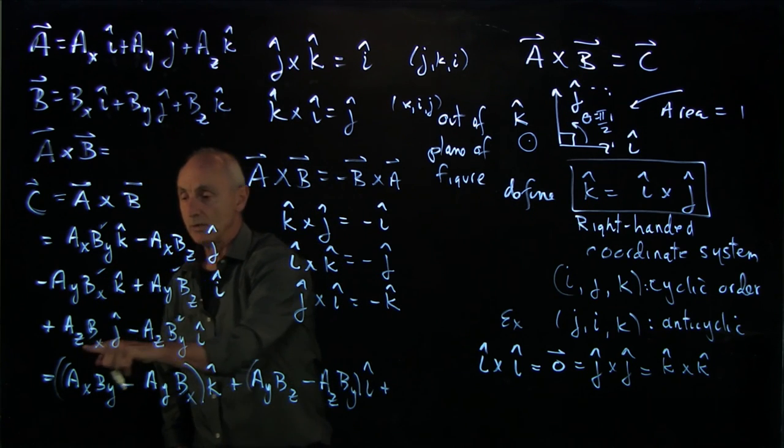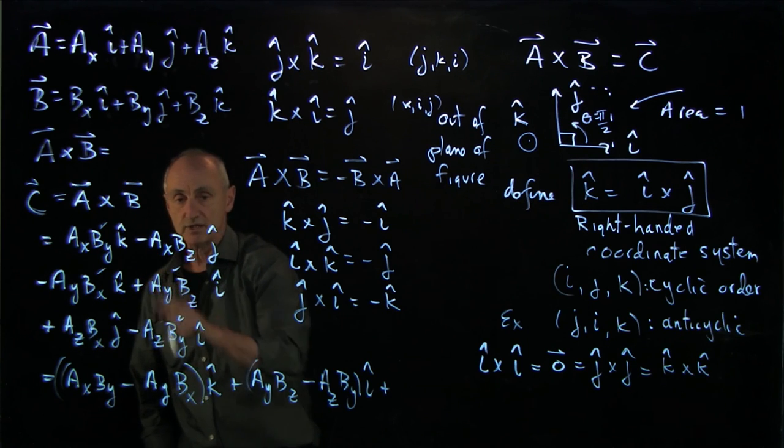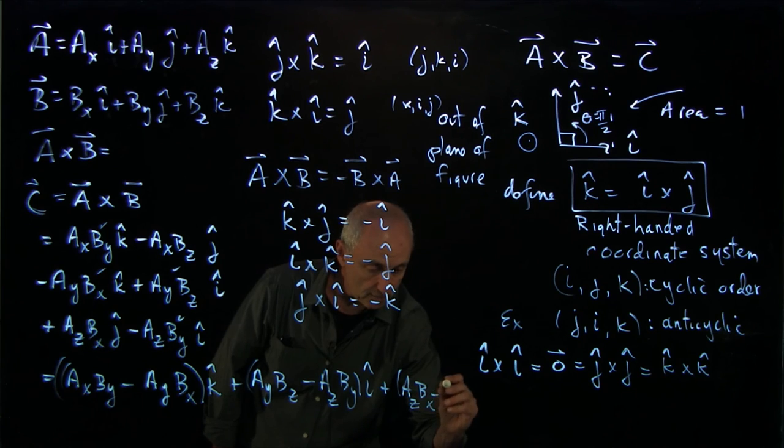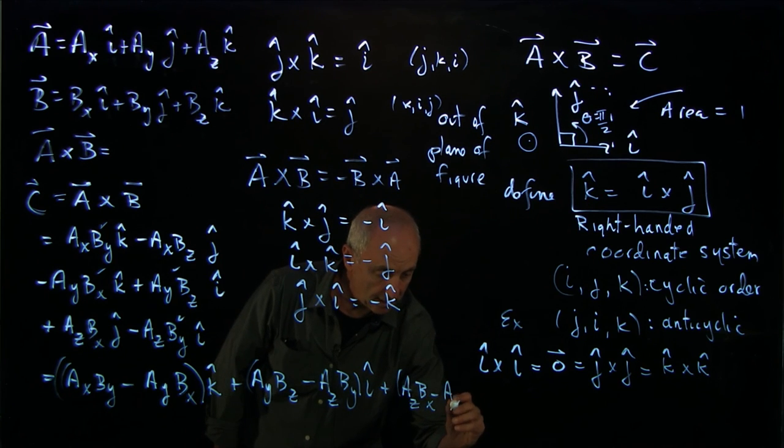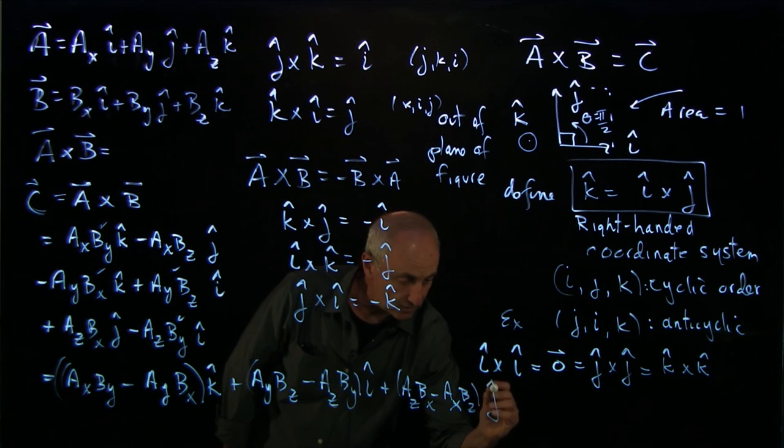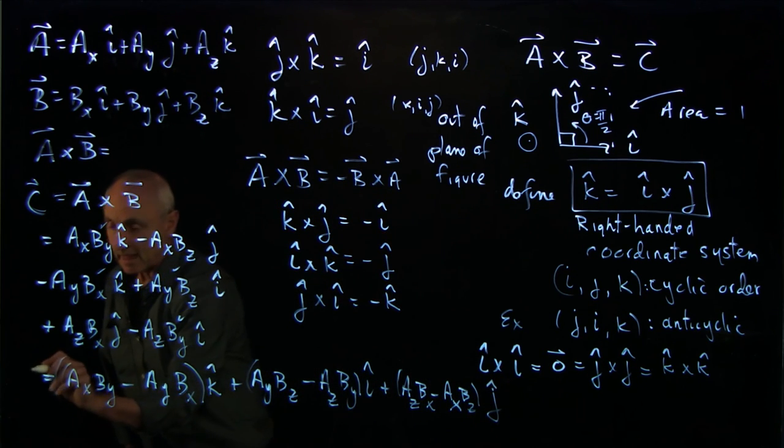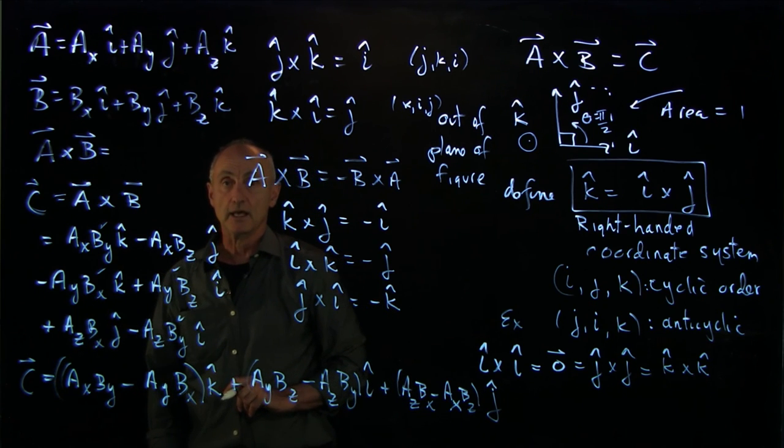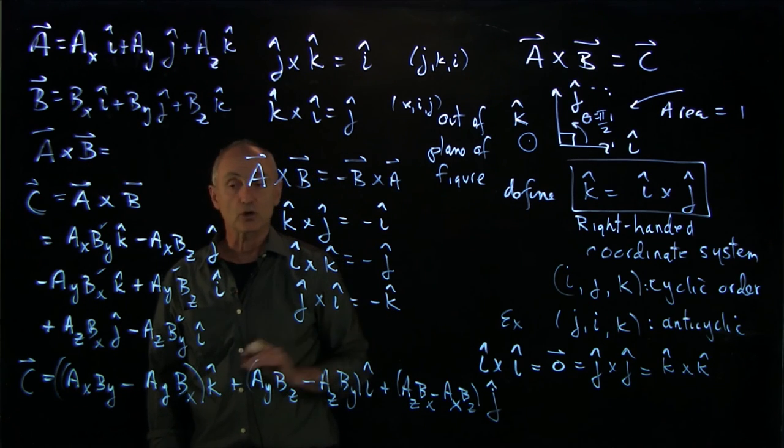And lastly, we have az bx minus ax bz. So we have az bx minus ax bz. And that's j hat. And that's how we calculate the cross product in Cartesian coordinates.